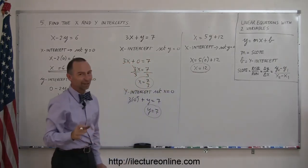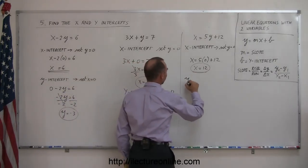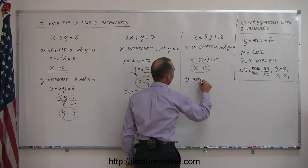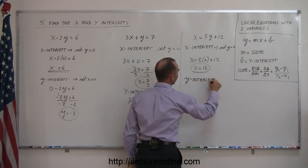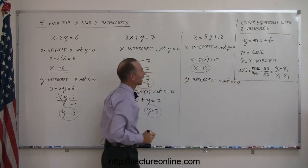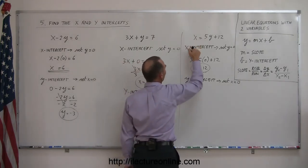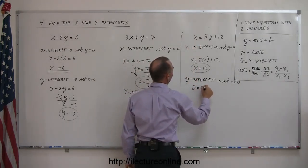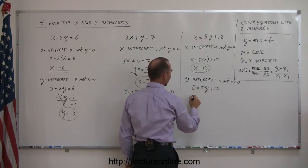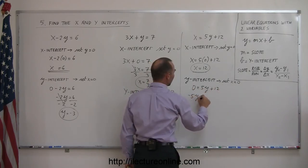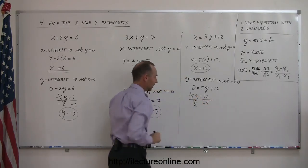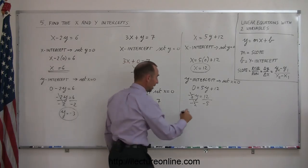One more for good measure. Given x equals 5y plus 12, we want to find the x-intercept. To find the x-intercept, you set y equal to zero. We get x equals 5 times zero plus 12, or x equals 12. That's the x-intercept.